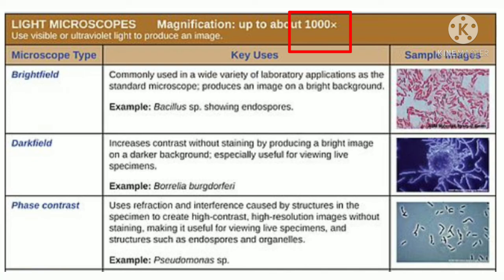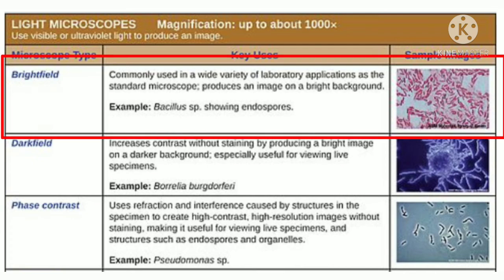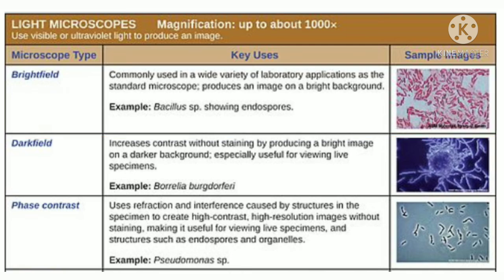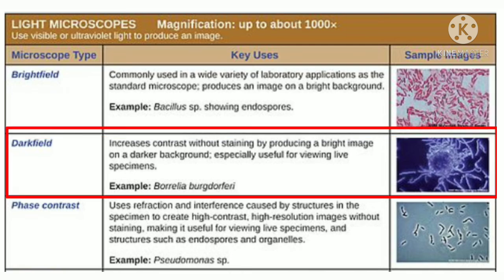Light microscopes provide magnification of up to 10³x, sometimes up to 1500x, using visible or ultraviolet rays. The first subtype is the bright field microscope, the most common type — you may have used this in school. It produces images on a brighter background: as seen in the sample image, the pink color of the specimen appears on a white background.